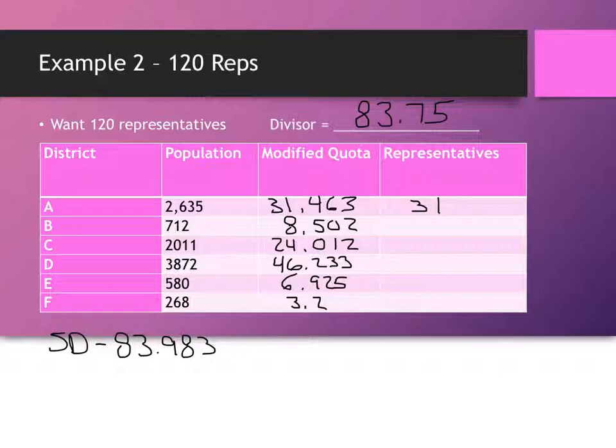So, standard rounding, 31, 9, 24, 46, 7, and 3 representatives. And if you add all those things up, you come up with 120 representatives just like you wanted to. So, that's the example, or that's two examples of Webster's method.